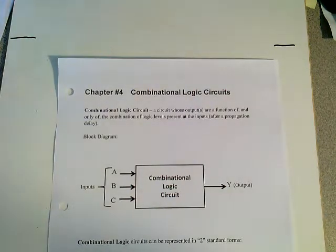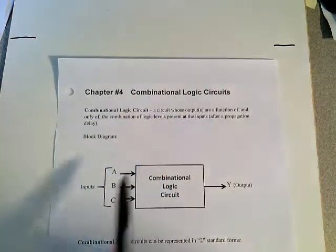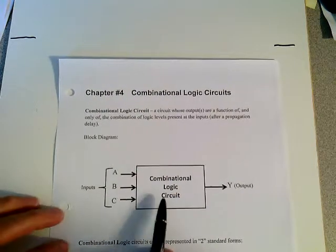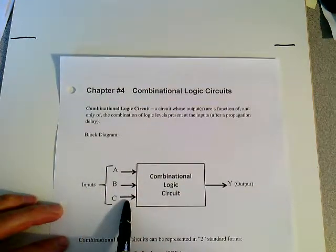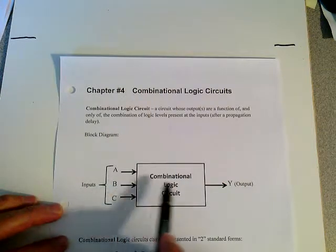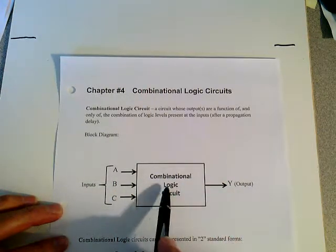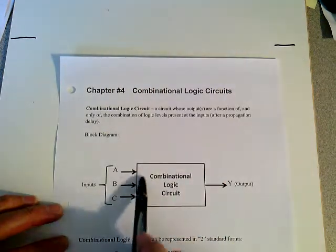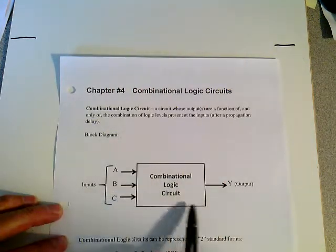Starting out on page 83 here, we're going to define Combinational Logic Circuits again. It's a circuit whose outputs are a function of and only of the combination of logic levels present at the inputs after a propagation delay. In a Combinational Circuit, you set up the inputs and the only delay between the input and the output response is going to be a propagation delay of the circuits inside this block here.